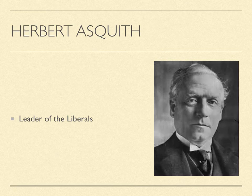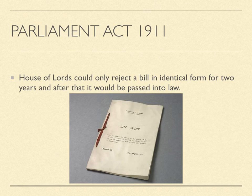Home Rule had been defeated twice, in 1886 and 1893, but this time it was different because Herbert Asquith, the leader of the Liberals, passed a new act called the Parliament Act. The Parliament Act stated that the House of Lords could only reject a bill for two years, and then it had to become law.